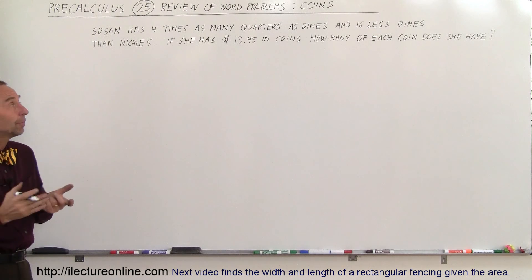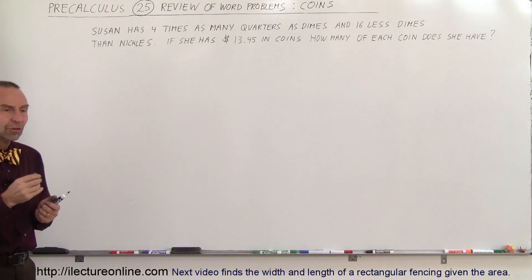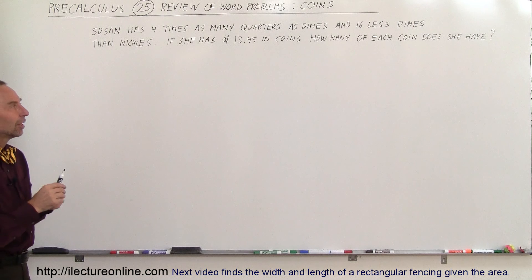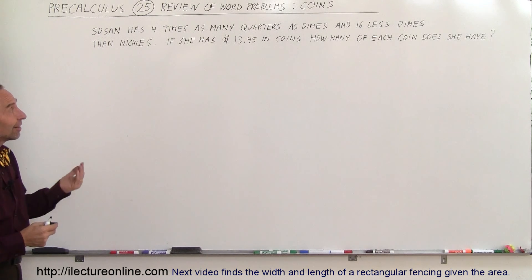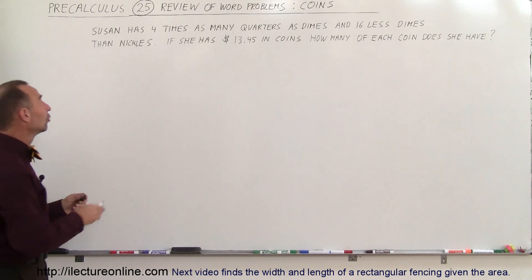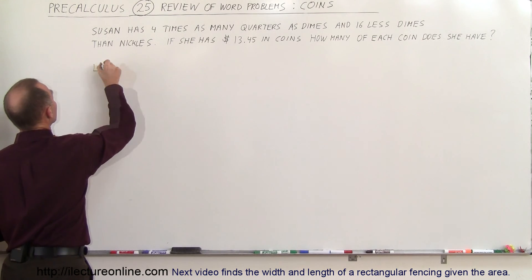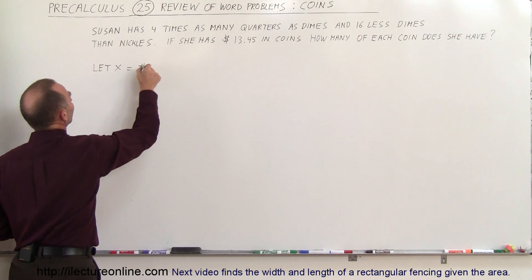Again, we want to start with let X equal something and let X represent the number of coins that she has of the least amount of coins. And in this case, she has less dimes than nickels and less dimes than quarters. So let X equal the number of dimes.